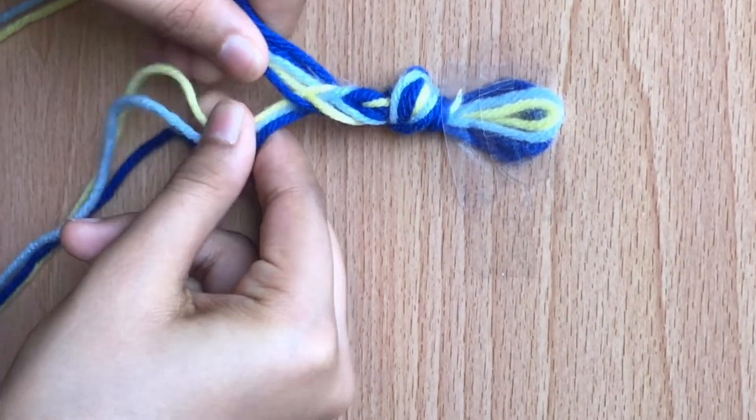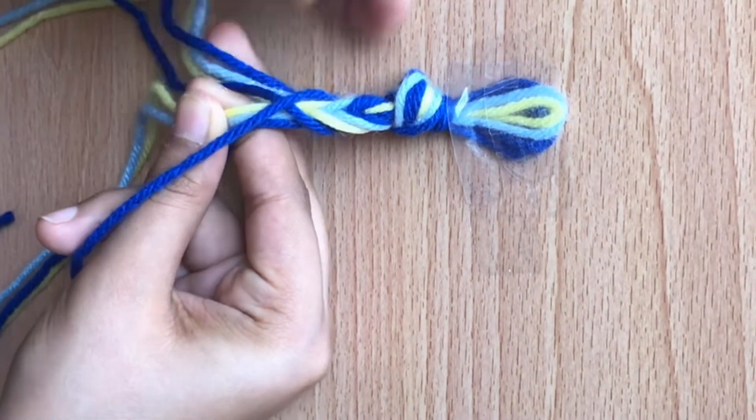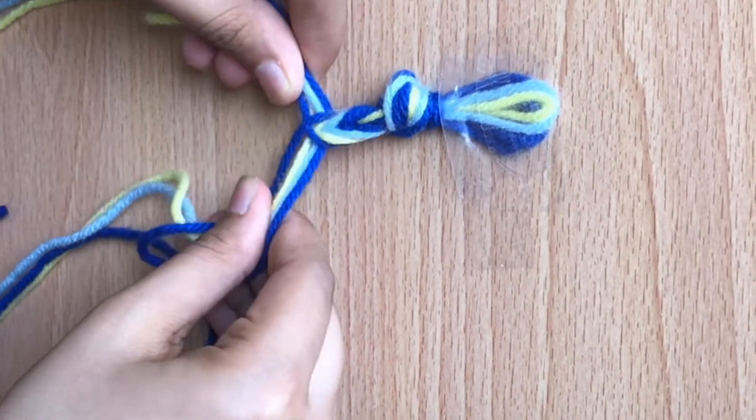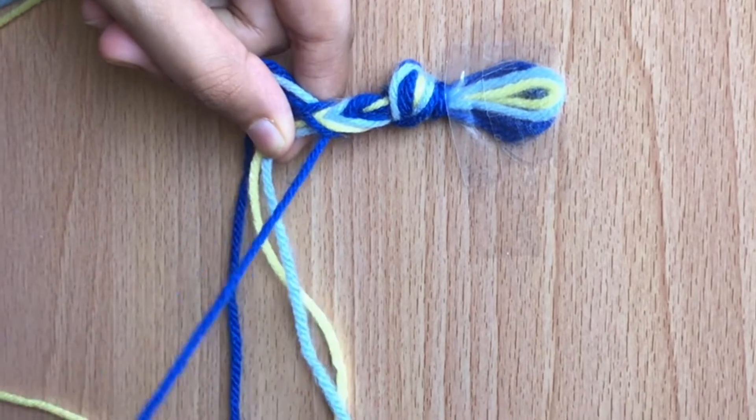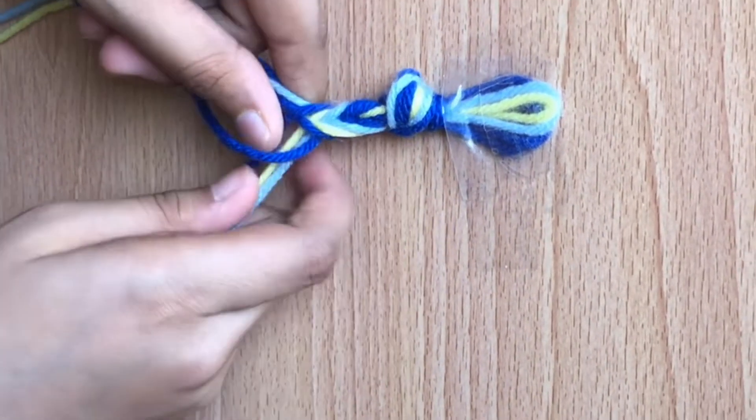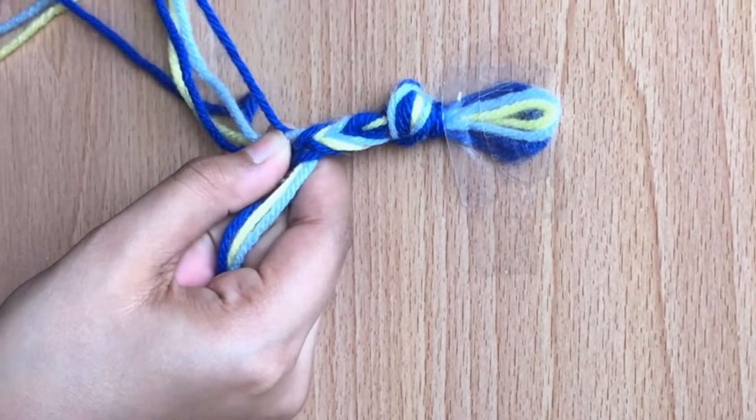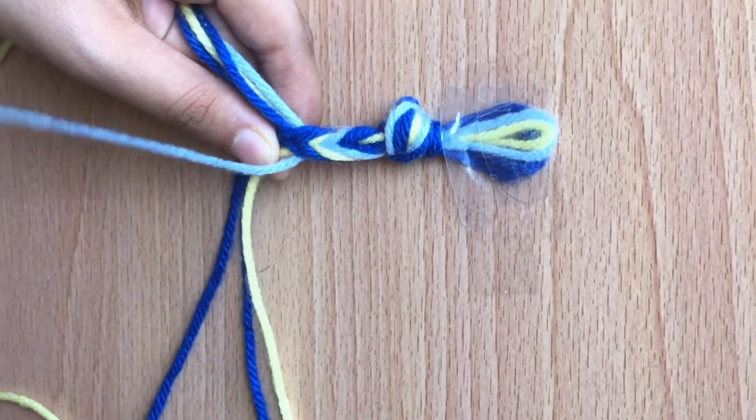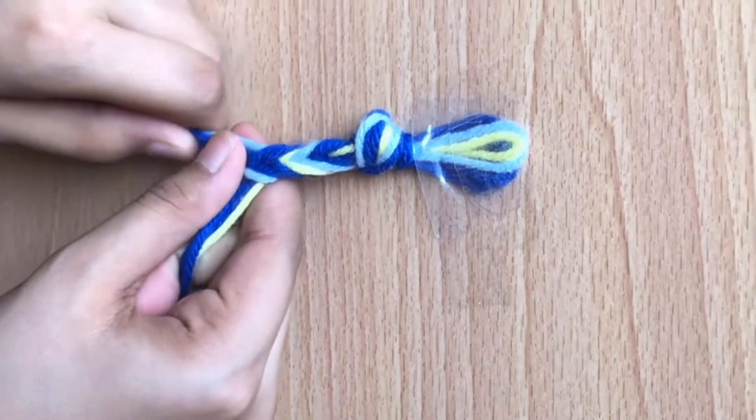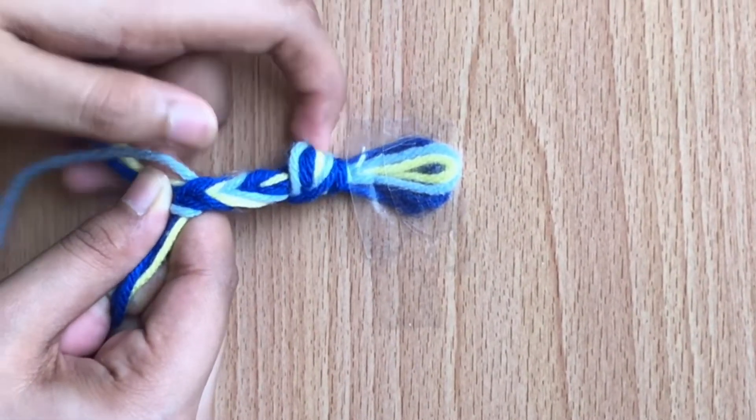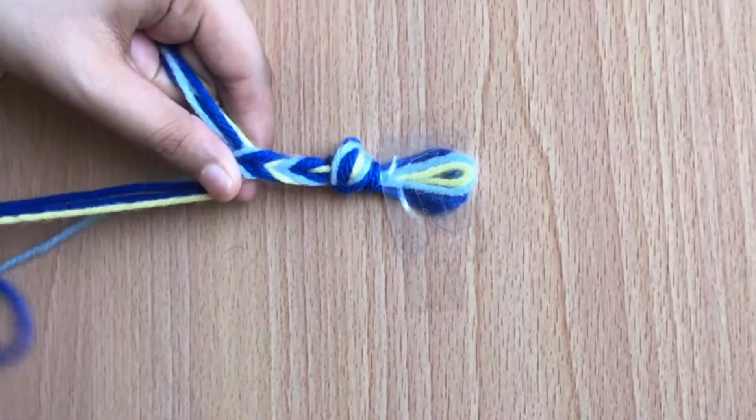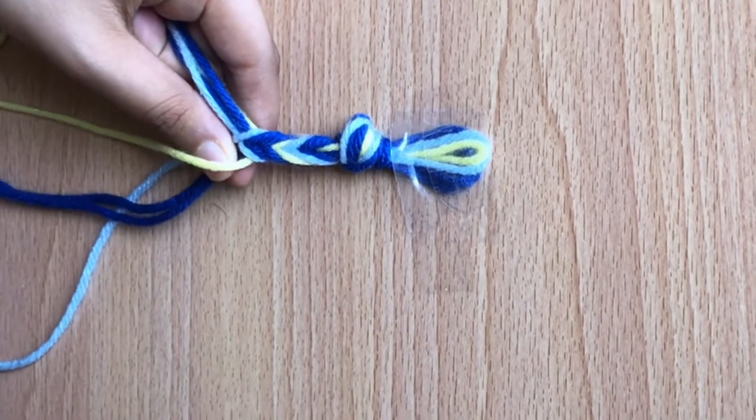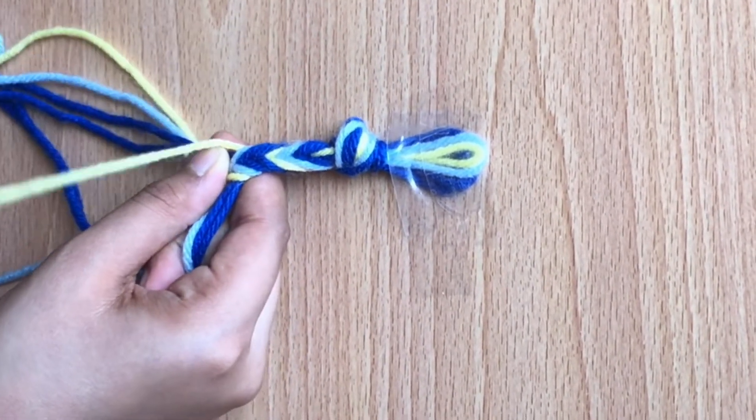Now once you're comfortable hold the two sides in your hand and start with doing the same thing right in the middle then left. The way of making this bracelet is very similar to braiding so if you're familiar with braiding this should be really easy.